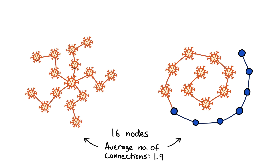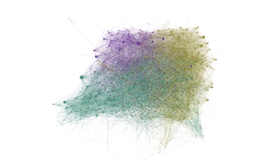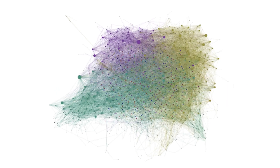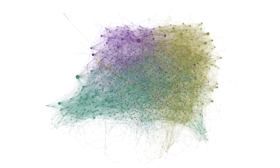We can see that the number of nodes and the average number of connections isn't always enough to treat networks the same way. The shape and the way nodes are connected is very influential over the path the virus takes. This is why cities with very similar populations can see huge variation in infected numbers. Of course, these models are very simple — the real world is much more complicated, with thousands or even millions of nodes and a messy mix of all characteristics in a single social network.